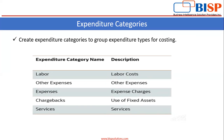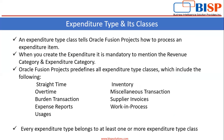Now we will see what is expenditure type and its classes. An expenditure type class tells Oracle Fusion Projects how to process an expenditure item. When you create the expenditure type, it is mandatory to mention the revenue category and expenditure category. So when you create the expenditure type, you have to assign those categories.